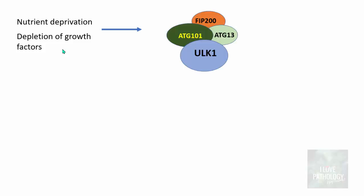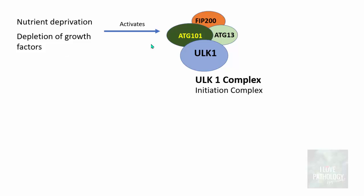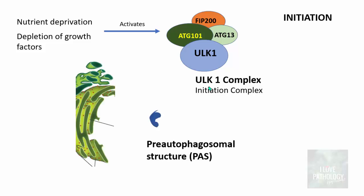Whenever there is nutrient deprivation or depletion of growth factors, that activates a set of proteins called the ULK1 complex — a set of four proteins which includes ULK1, ATG101, ATG13, and FIP200. Just note that this is called the ULK1 complex, also called the initiation complex, because this complex initiates the process of autophagy. It takes some membrane and forms a pre-autophagosomal structure, which comes before the formation of the phagophore.